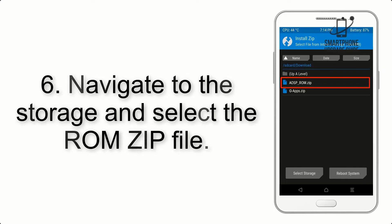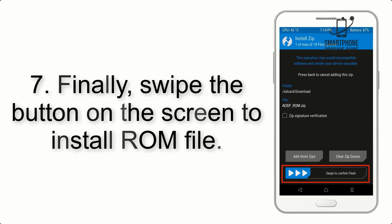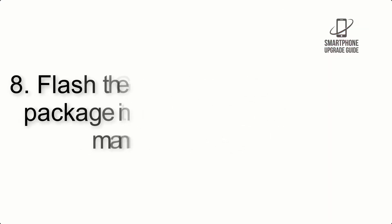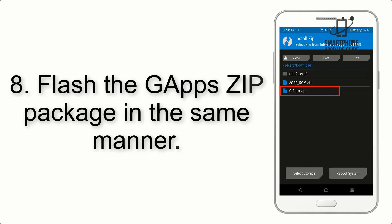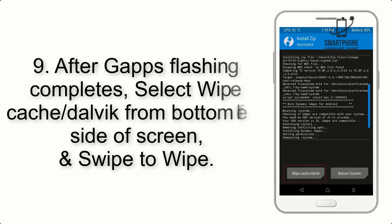Step 6: Navigate to the storage and select the ROM zip file. Step 7: Finally, swipe the button on the screen to install the ROM file. Step 8: Flash the GApps zip package in the same manner.